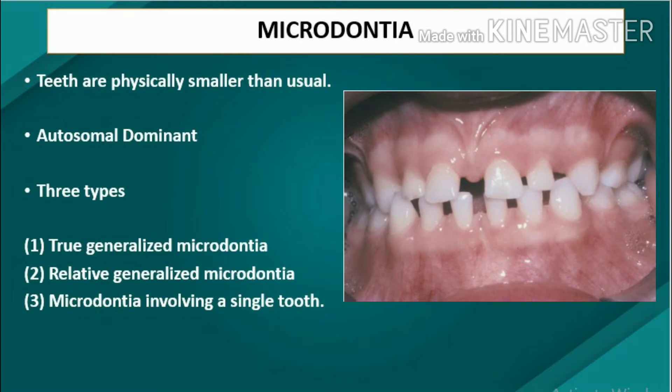Microdontia. The term microdontia should be applied only when the teeth are physically smaller than usual. Microdontia is usually transmitted as an autosomal dominant with incomplete penetrance. Three types of microdontia are recognized.